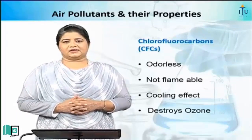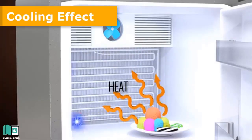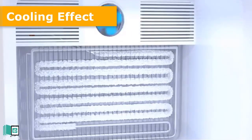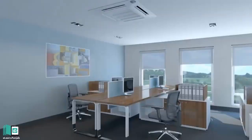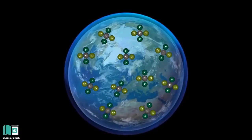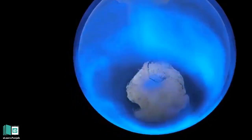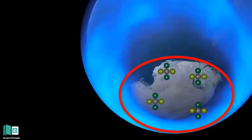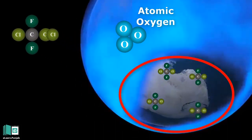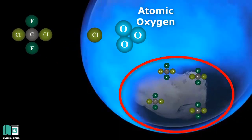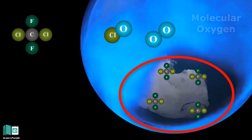An important property of chlorofluorocarbon is that it produces a cooling effect. Therefore, these gases are used in refrigerators, air conditioners, and fridges. These gases can also reduce the amount of ozone, which is one of the important properties of these air pollutants. The chlorine in chlorofluorocarbon reacts with ozone and converts atomic oxygen to molecular oxygen.